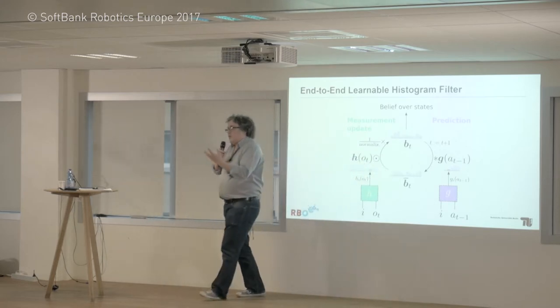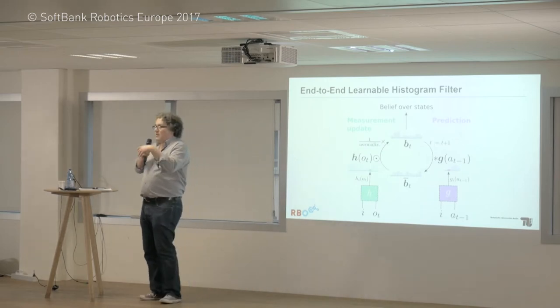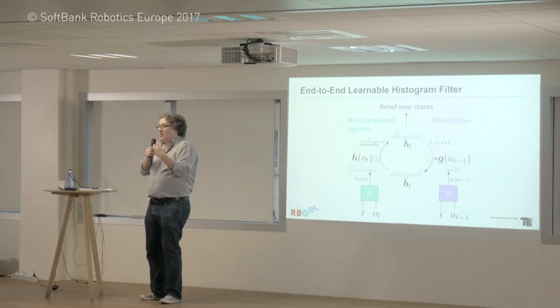This is also something that people have shown in humans — the sensory system predicts what the next sensory signal is and perceives the difference between the prediction and what's actually happening. So I think prediction is absolutely essential.